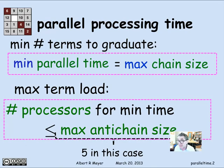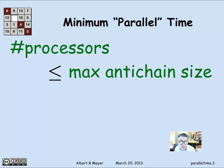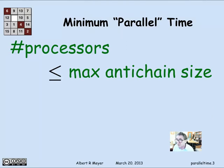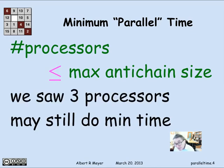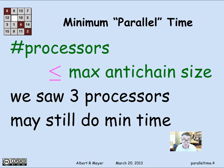That maximum anti-chain size is an upper bound on the number of processors needed to achieve minimum time. But in fact, it's a coarse upper bound. Although the number of processors needed to achieve minimum parallel time is at most the maximum anti-chain size, in the previous example you could get away with three processors — it was possible to schedule the subjects taking only three courses a term and still finish in minimum time.